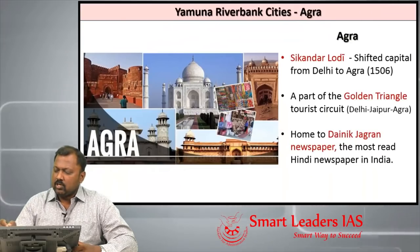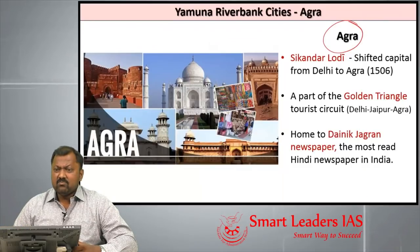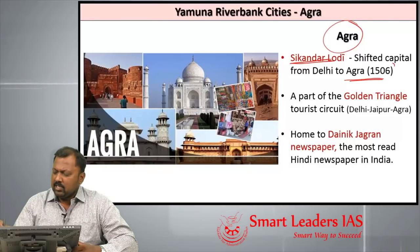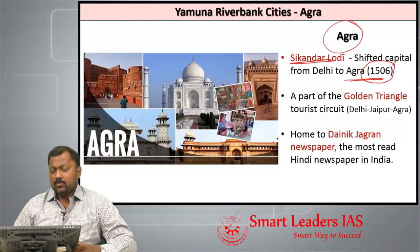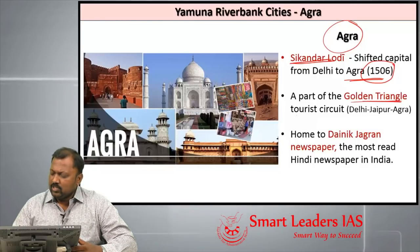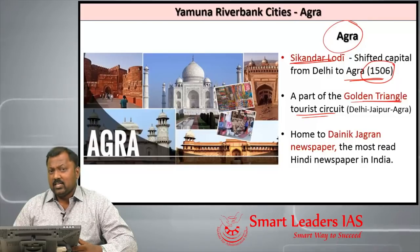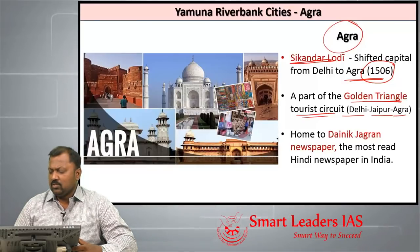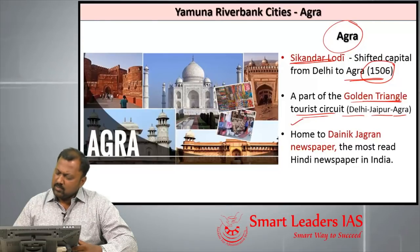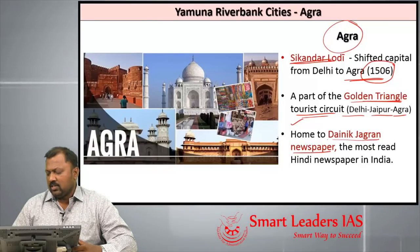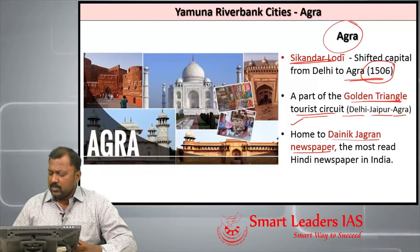Agra city was founded during the time of Sikandar Lodi, who made it his capital in 1506. In the present day, Agra forms an important city in the Golden Triangle tourist circuit, which includes Delhi, Jaipur, and Agra. Agra is also home to Dainik Jagran, the largest selling newspaper in India.